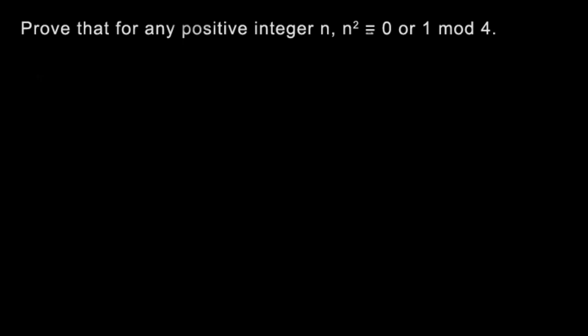Prove that for any positive integer n, n squared is congruent to 0 or 1 mod 4. So for this question, the result that n squared is always 0 or 1 mod 4 is really important. You use it in a lot of problems, and it's really good to keep in mind.